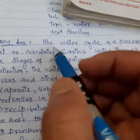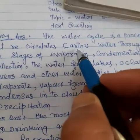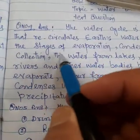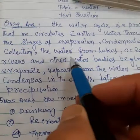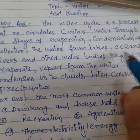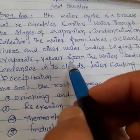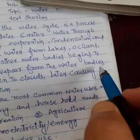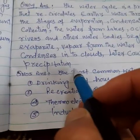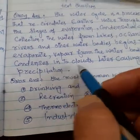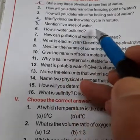Briefly describe the water cycle in nature. The water cycle is a process that recycles water through the stages of evaporation, condensation, and collection. Water from lakes, oceans, rivers and other water bodies begins to evaporate. Vapor from water bodies condenses into clouds, later causing precipitation.